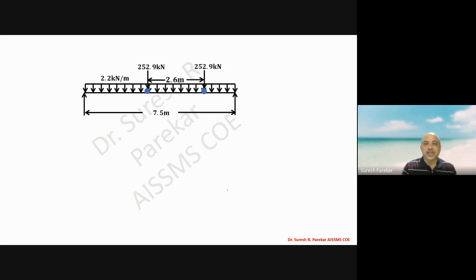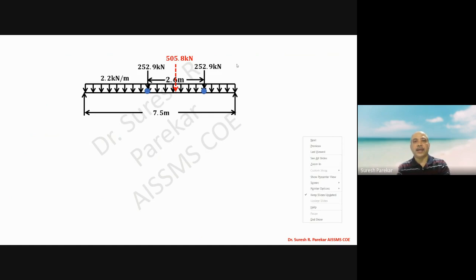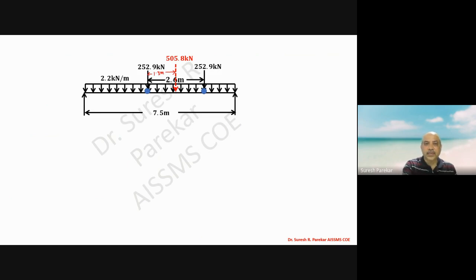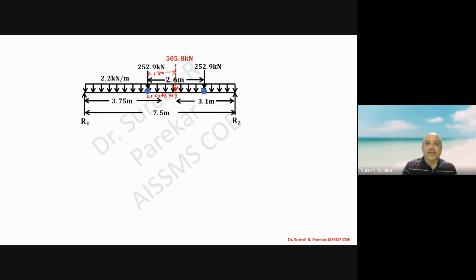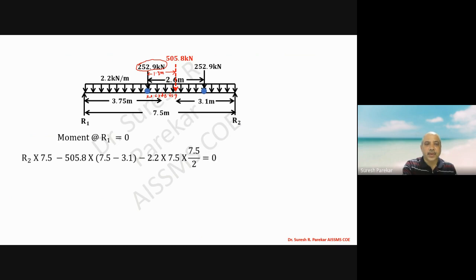For maximum bending moment, one wheel and the center of the span should be equidistant. The center of total load 505.8 kilonewton is located 1.3 meters from one of the wheels. This gives a distance of 0.65 meters on each side of the span center. Maximum bending moment is found under one of the wheel loads of 252.9 kilonewton. We take moment about R1.